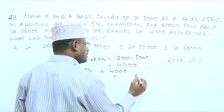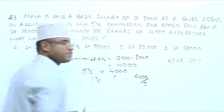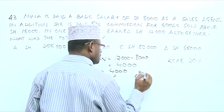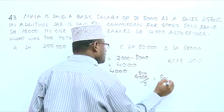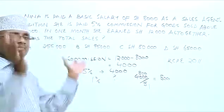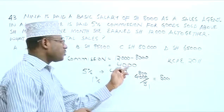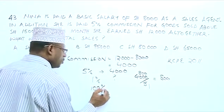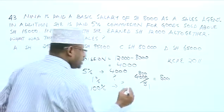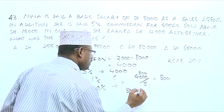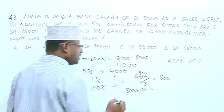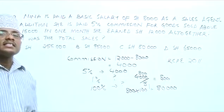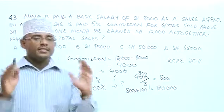So, 1% will be $4,000 divided by 5, which gives us $800. So 1% is $800. Now, what about 100% — the total sales? If 5% of the sales is $4,000, what about all the sales — 100%? So, 100% will be $800 multiplied by 100, which gives us $80,000. So $80,000 is the sales — the total sales on which she earned commission.